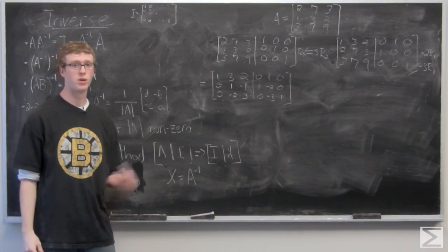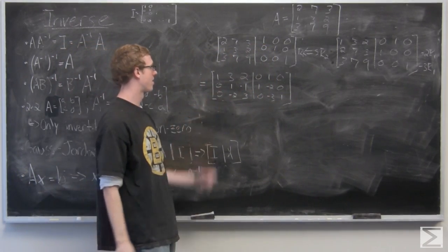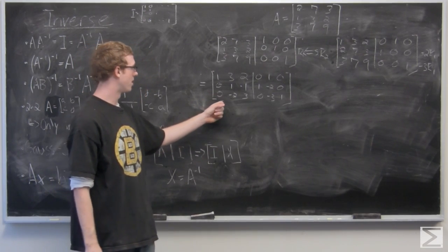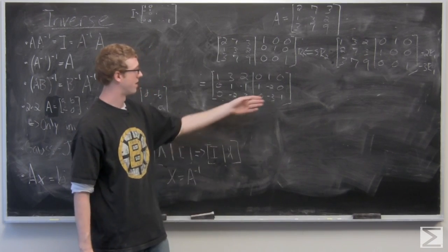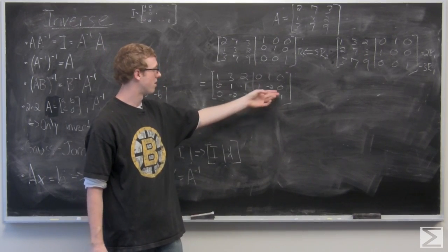So we see that the first row is going to remain unchanged, the second row is zero, one, negative one, the third row, zero, negative two, three. And then we have changed on the right over here as well.